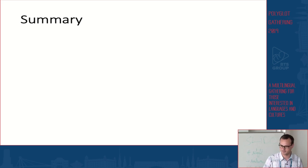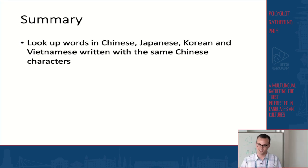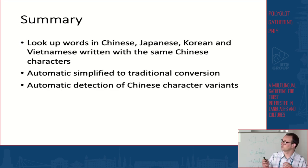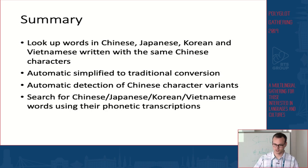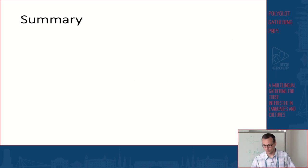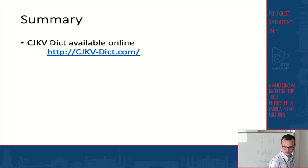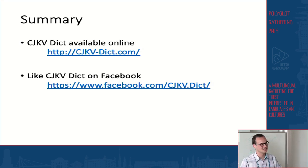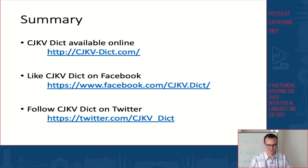Before we wrap up, here's a quick summary of CJKVDICT's features: its main purpose is to look up words in Chinese, Japanese, Korean, and Vietnamese written with the same Chinese characters; it automatically converts simplified characters to traditional; it automatically detects Chinese character variants; you can search using a wide range of standard phonetic transcriptions; and it helps you detect false friends. It's available online at cjkv-dict.com. You can also like the Facebook page at facebook.com/CJKVDict and follow on Twitter at twitter.com/CJKV_dict.